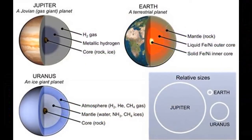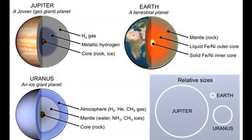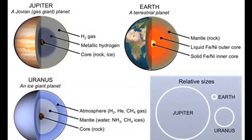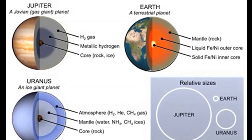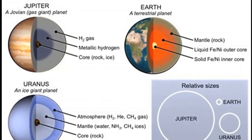Ices: These include ammonia, methane, carbon dioxide, and water. They have intermediate melting points. For example, water has a melting point of zero degrees Celsius.